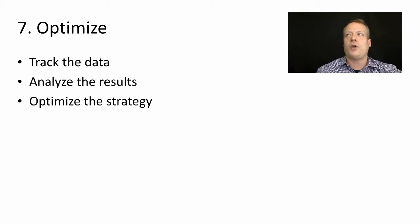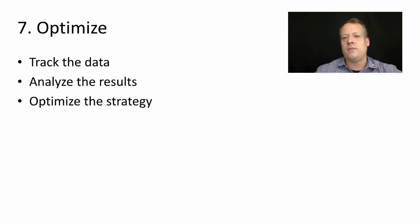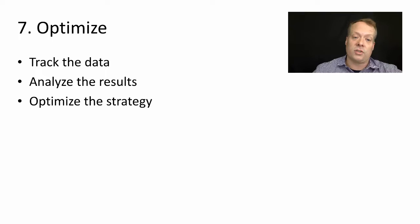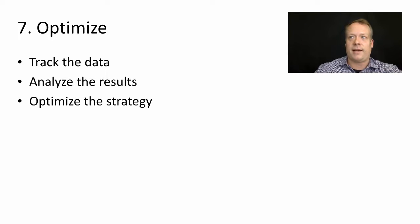Step seven is to optimize. Track the data along the way, see whether or not you're meeting objectives. If you aren't, think about a new way to alter your approach so that you can try to meet those objectives. Analyze the results as they come through, optimize your strategy, think about how to change and improve it, and then go back and repeat.